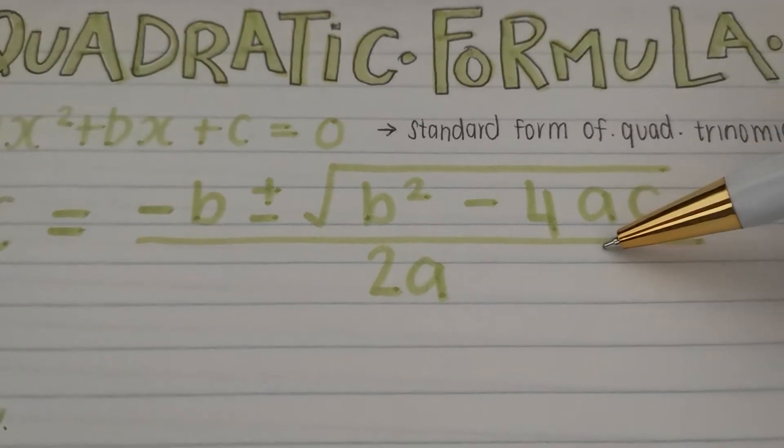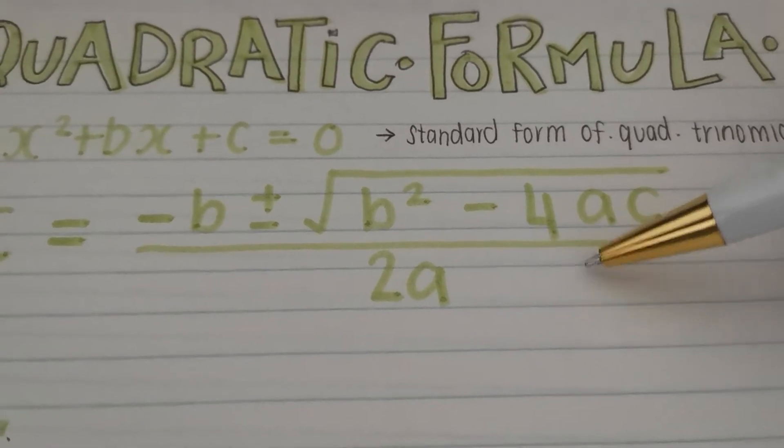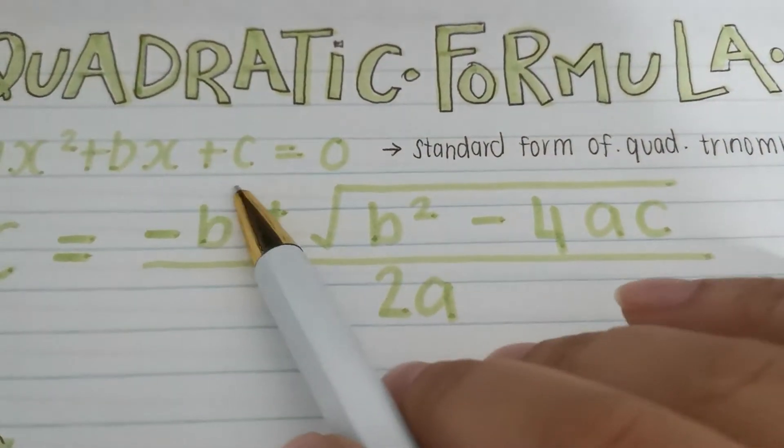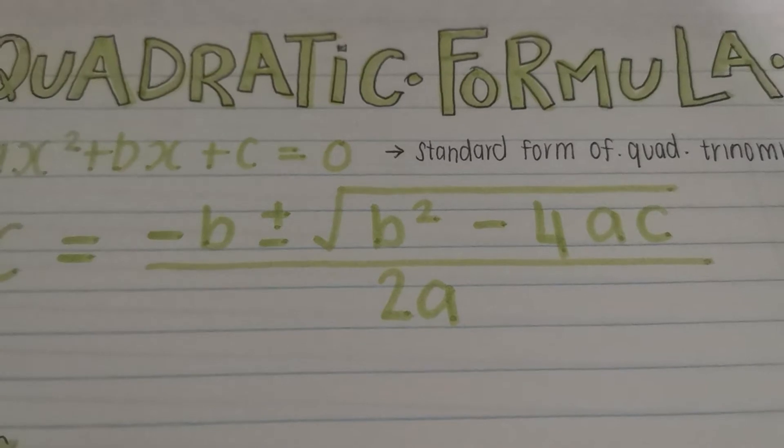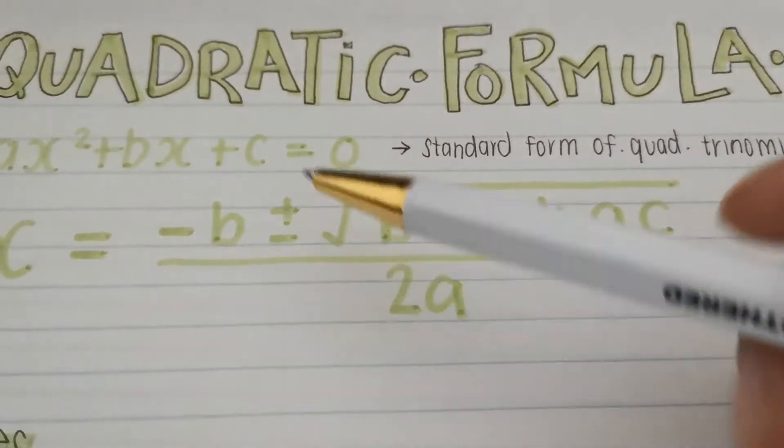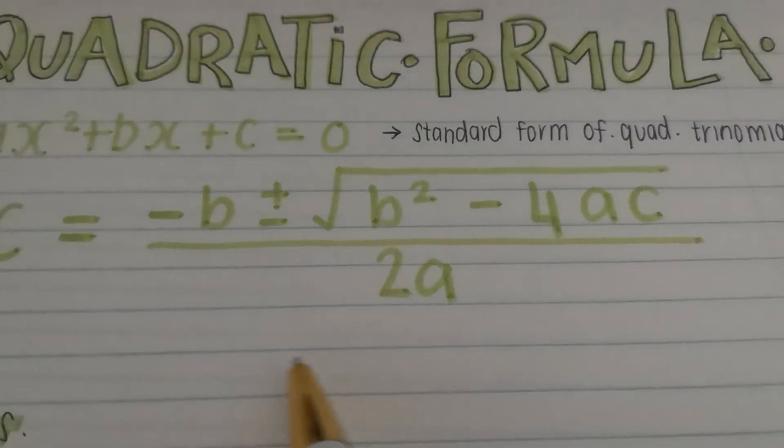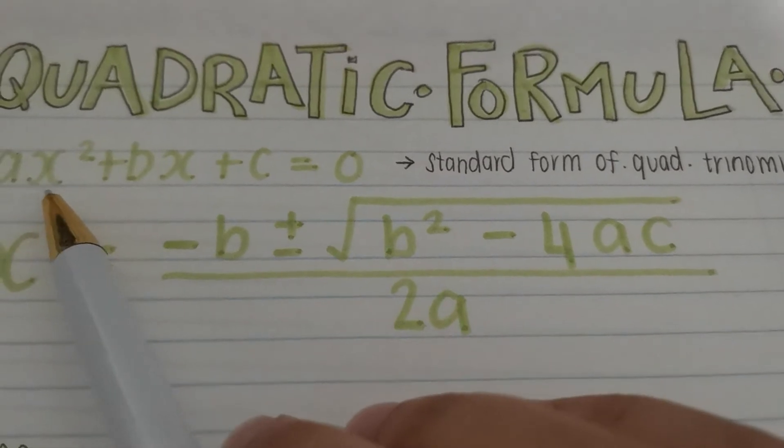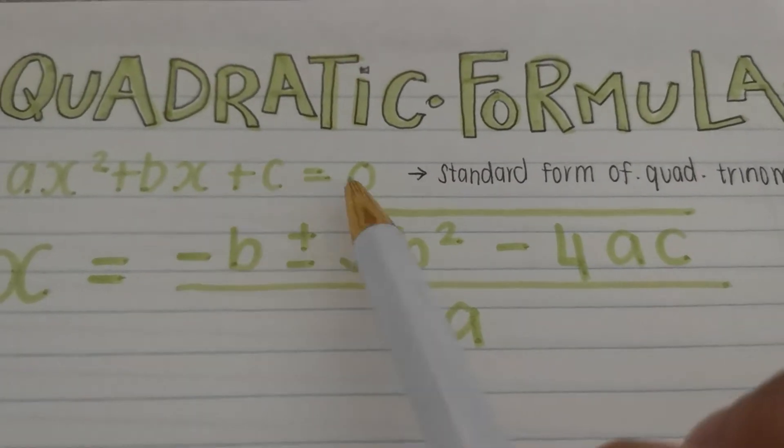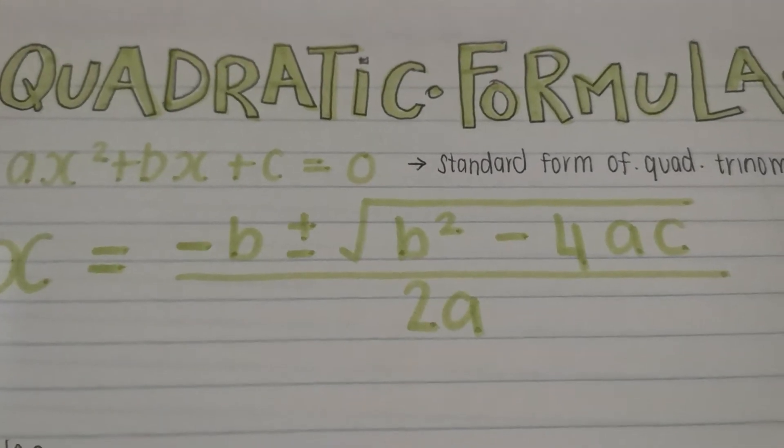This formula, this one over here, can work out the answers to this. When I say the answers, I mean to figure out the roots or the two numbers that can give you, that if you substitute into the place of x, can give you 0. That's what it's trying to do.